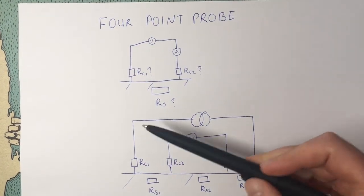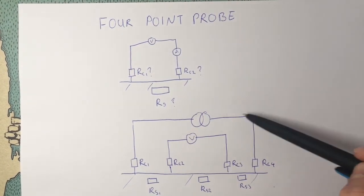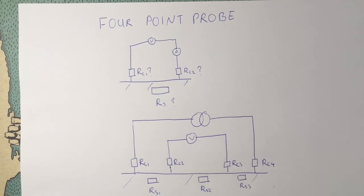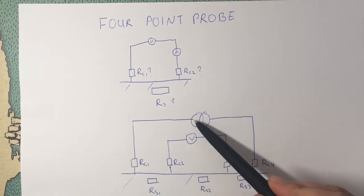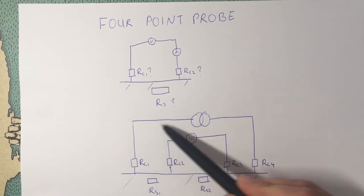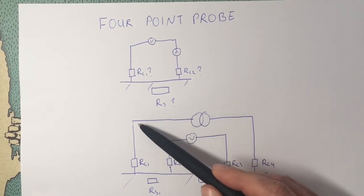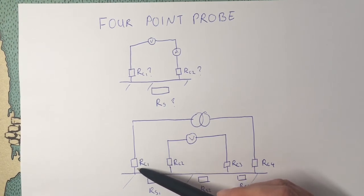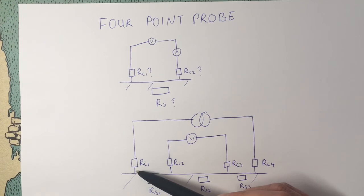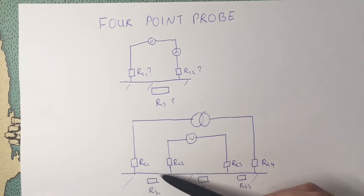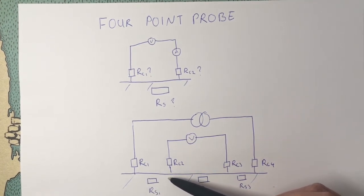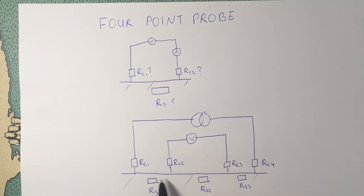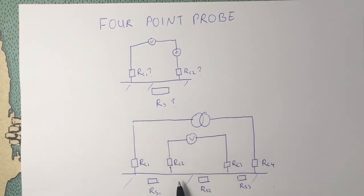So what happens now if we separate the current and the voltage measurement? We are going to supply a current. So some known current is going to flow through this probe. There will be some voltage drop over this contact resistance. We don't know what that is. Again, there will be some voltage drop over this resistor. We only get a voltage drop when we have current flow and some resistance. Then again we are going to get another voltage drop.